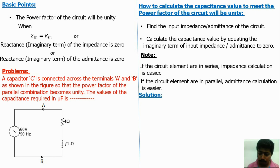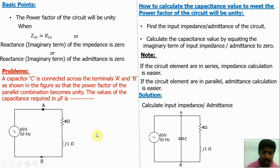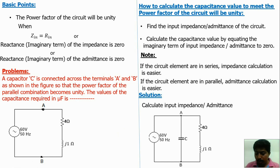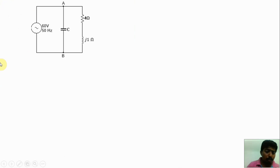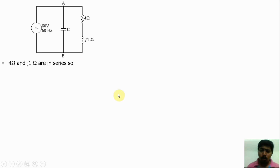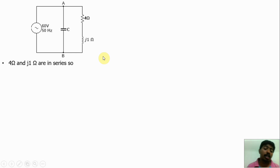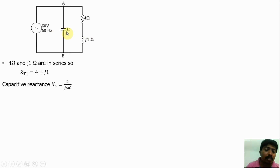First, we have to find the input impedance or admittance for the circuit. Here, in the terminal a and b, a capacitor is added. To calculate the input impedance, eliminate the source using network reduction concepts. The 4 ohm and j1 ohm are in series, so Z_T1 equals 4 plus j1. Then Z_T1 is in parallel with the capacitance.